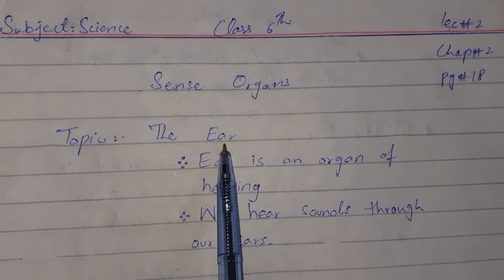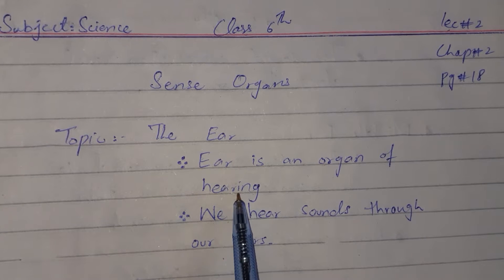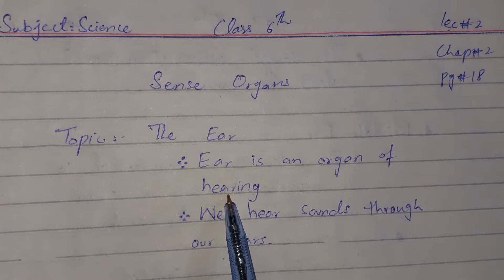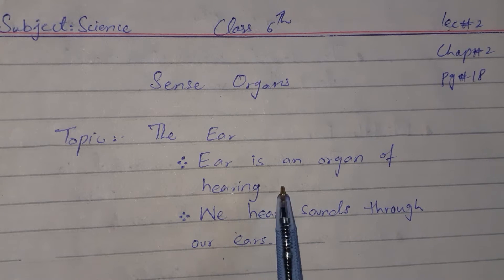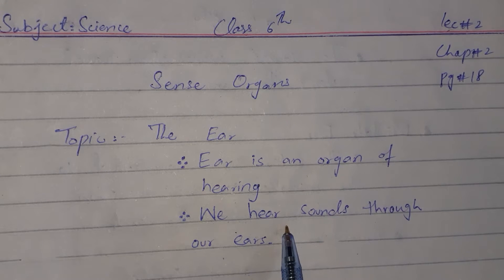Students, ear ka matlab hai kaan. Ear is an organ of hearing. Hamare paas kaan hamare jism ka wo aza hai jise hum sunne ke liye istemaal karte hain. We hear sounds through our ears. Hum apne kaanon ko aawaazein sunne ke liye istemaal karte hain.